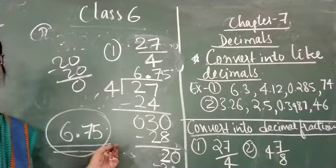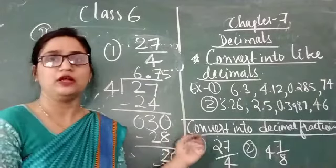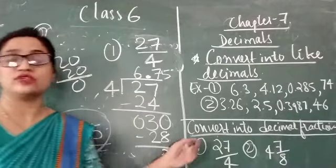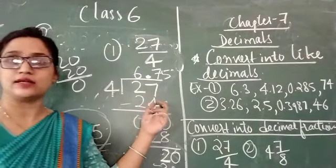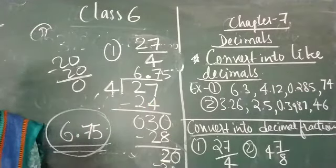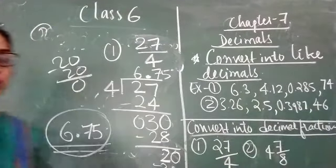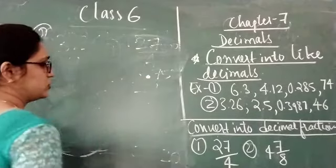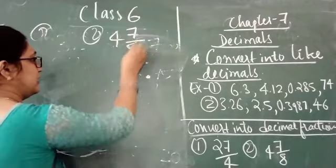6.75 is a decimal fraction. So it is very simple to convert a fraction into a decimal fraction — we just divide them directly and get the answer in decimal form. There will be no remainder left. Now the next number is given in the form of a mixed fraction — 4 and 7 upon 8.